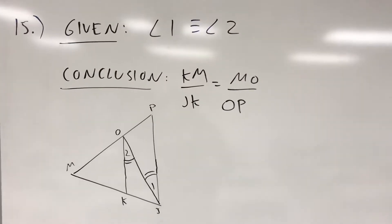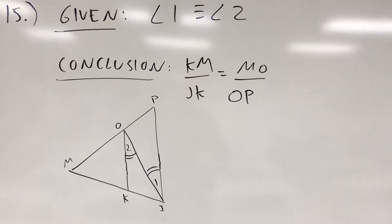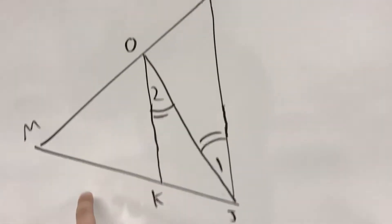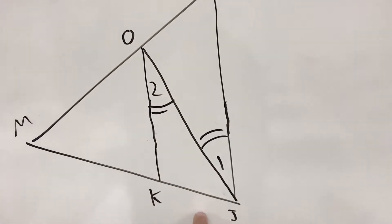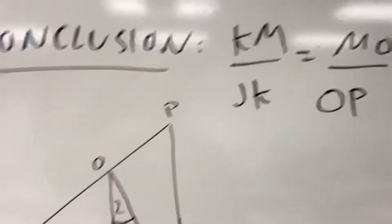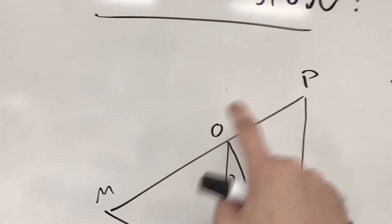They want me to prove that km over jk, and notice that's km right here over jk, is congruent to mo over op.